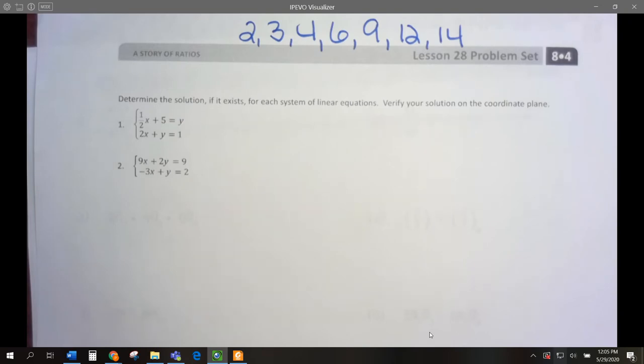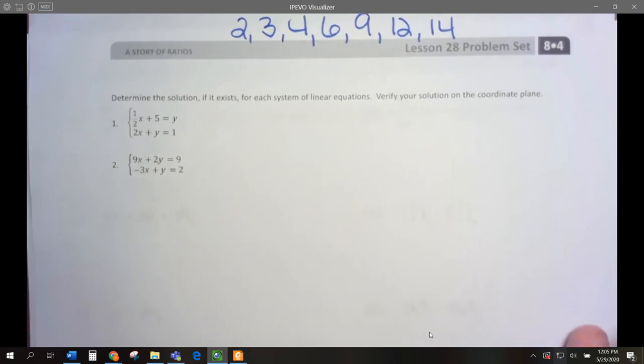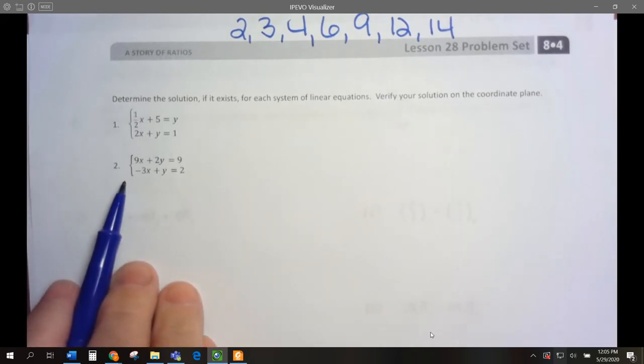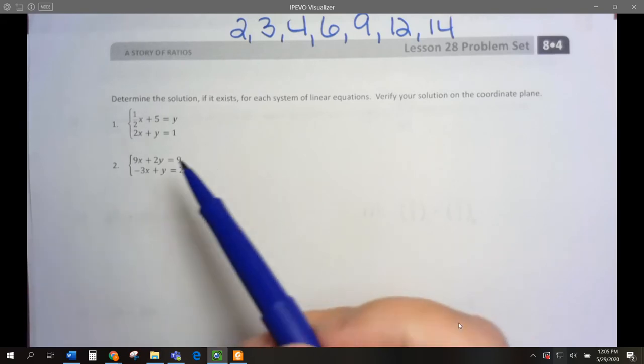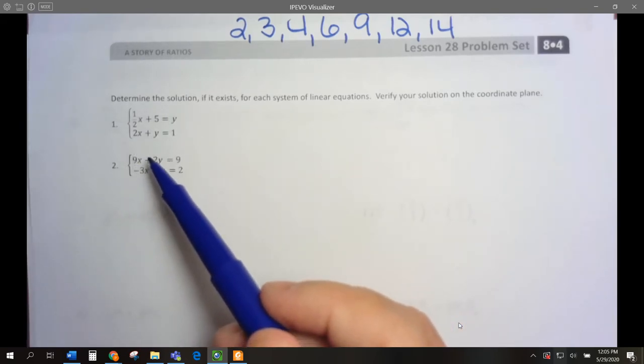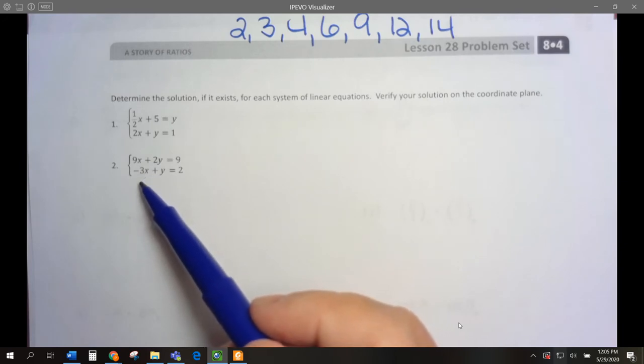Let's start with number 2. These are both written in standard form. We could choose elimination, except we don't have anything that will disappear when we add. I have 9x, so I'd need a negative 9x, but I have a negative 3x. But that gives me an idea. If I multiplied it by 3, I would have a negative 9x, and that would work.